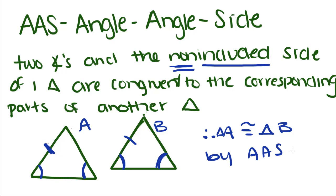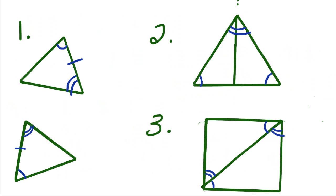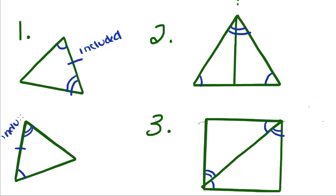Now that we know two more ways to prove triangles are congruent, we're going to apply them. For the first example, I know that this angle is congruent to this angle, this angle is congruent to this angle, and this side is congruent to this side. To know whether to use angle-side-angle or angle-angle-side, what really matters is which sides are congruent. Since this side is included between these two angles, and this side is also included between these two angles, we know we're going to use angle-side-angle.